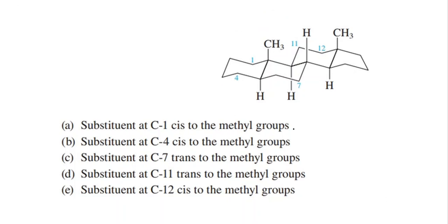Part a: substituent at C1, cis to the methyl groups. The methyls are up. At carbon one, up is equatorial and down is axial. So this substituent must be equatorial.